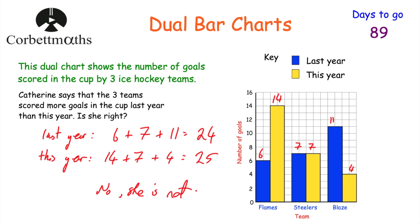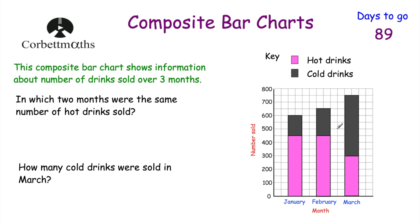Now let's look at composite bar charts, where two sets of information are stacked together. Here we've got a composite bar chart showing drinks sold over three months — January, February and March — with hot drinks in pink and cold drinks in grey. For January, hot drinks start at zero so they're easy to read: 450 hot drinks. For cold drinks we went from 450 up to 600, so 600 minus 450 equals 150 cold drinks. Each little box is worth 50.